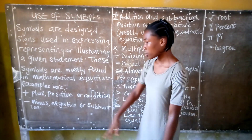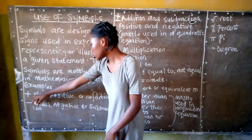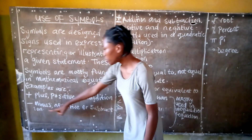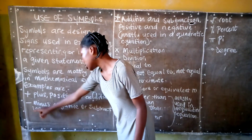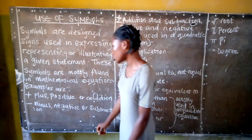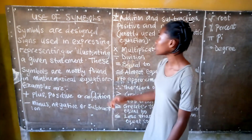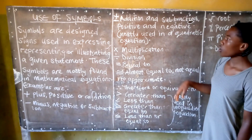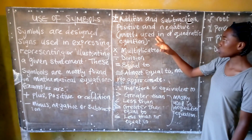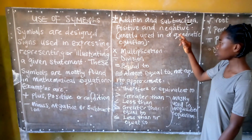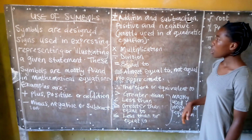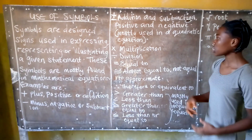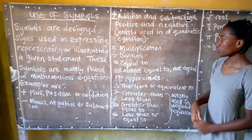Examples are the plus, positive, or addition sign. We have the minus, negative, or subtraction sign. The addition and subtraction sign, which is also the positive and negative sign, and these signs are mostly used in a quadratic equation.